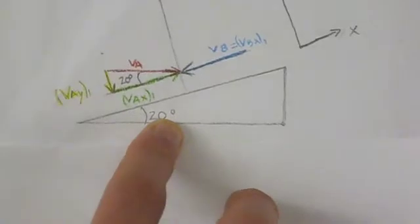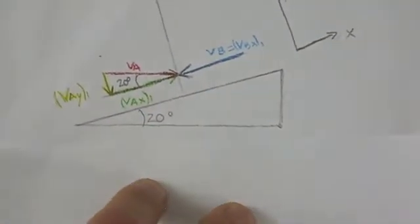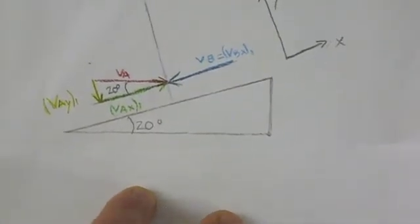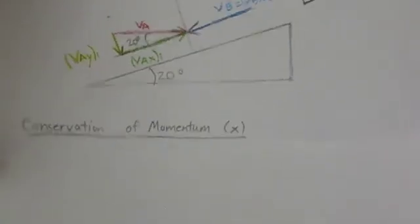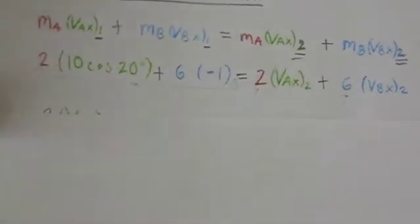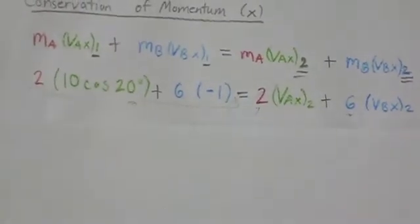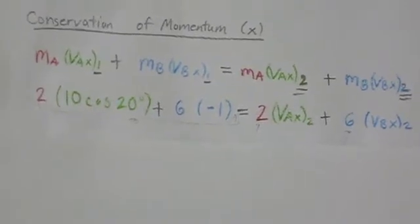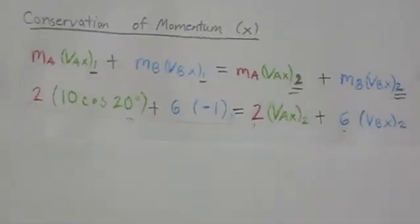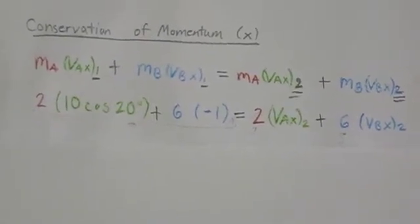We wanted to solve first for the velocities in the x direction, but we realized we needed two equations because we had two unknowns: the velocity in x of A and the velocity in x of B. The first equation we decided to use was conservation of momentum in the x direction. We took the mass of A times its initial velocity in x, plus the mass of B times its initial velocity in x, set equal to the mass of A times the final velocity in x, plus the mass of B times its final velocity in x.